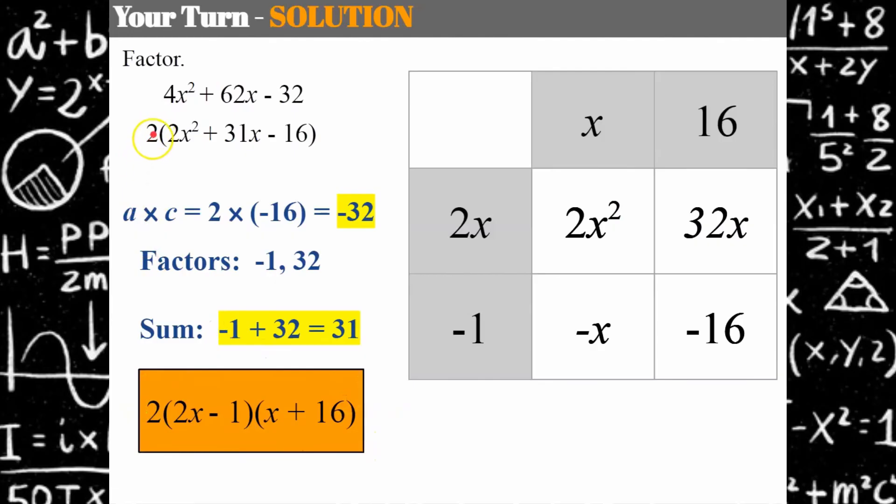If you had not factored out the common factor of 2 up here, you would probably have 4x - 2 or you could have 2x - 32 here, and you would notice it's not completely factored because the binomial factor would have a common factor. So we call this being completely factored.